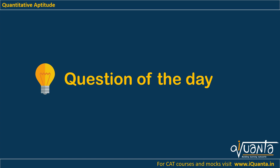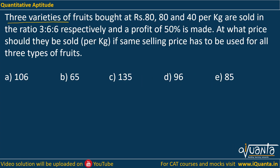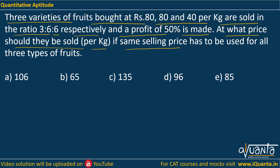Let's try to solve today's question. Three varieties of fruits bought at rupees 80, 80, and 40 per kg are sold in the ratio 3:6:6 respectively, and a profit of 50% is made. At what price should they be sold per kg if the same selling price has to be used for all three types of fruits?